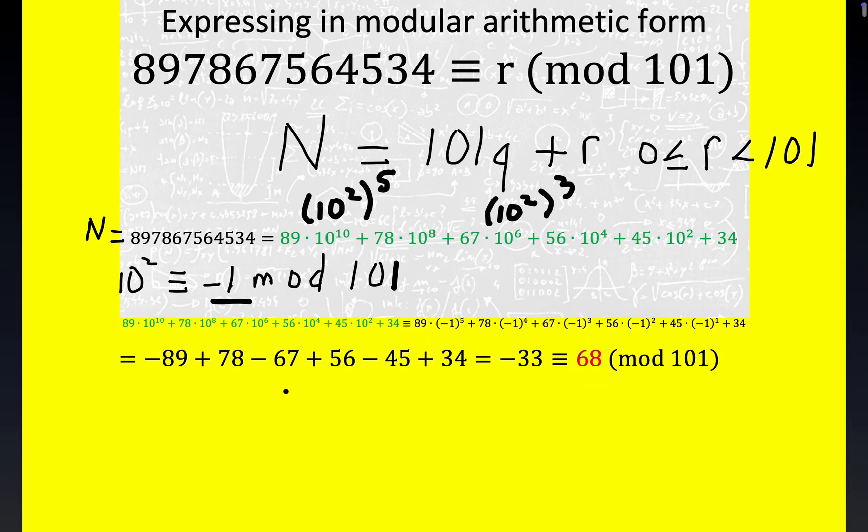Now, this all adds up to negative 33. We're seeking a remainder between 0 and 100. And so 68, of course, is congruent to minus 33. And it's, again, 68. That's the same as 68 plus 33, which would be 101. And again, we're doing modular arithmetic. The modulus is 101. So this is our answer, folks, 68.